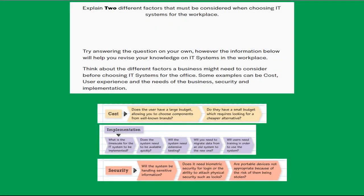I'll have an example question on the screen now: explain two different factors that must be considered when choosing IT systems in the workplace. Think about the structure and considerations when choosing IT systems, especially in a business or workplace. There's information at the bottom of the screen to help you answer the question, but try doing it on your own first — see what you can come up with. If you can't do it, then use the information.